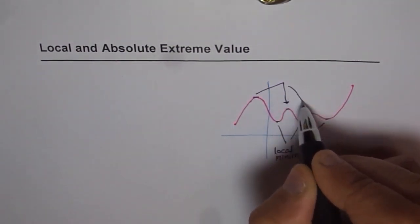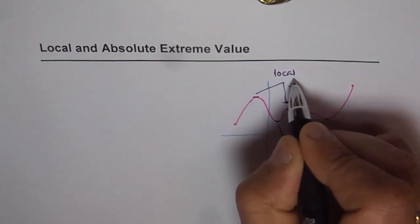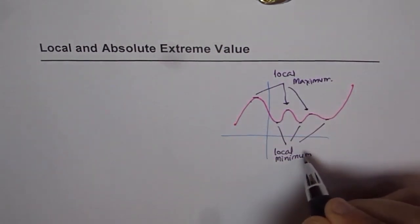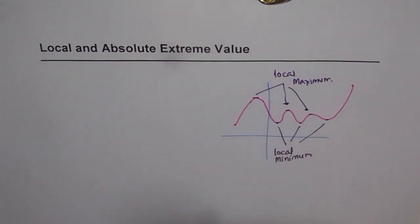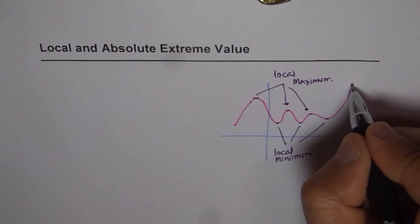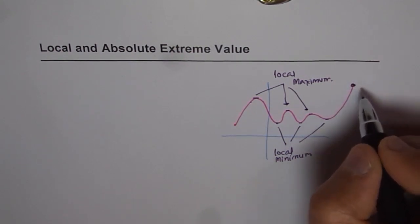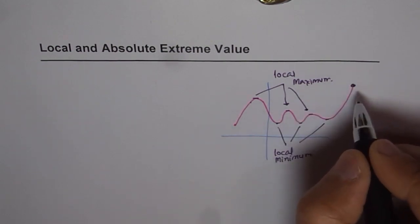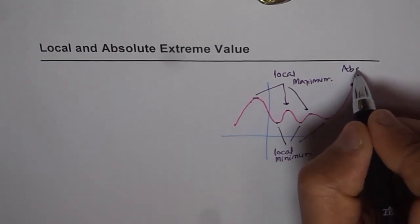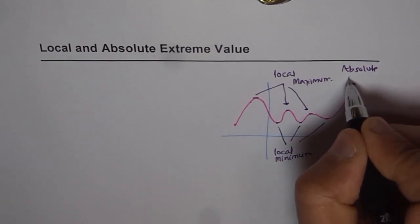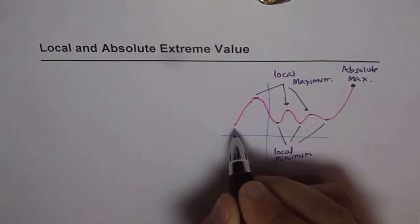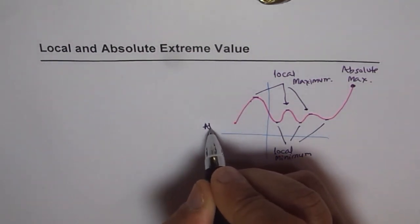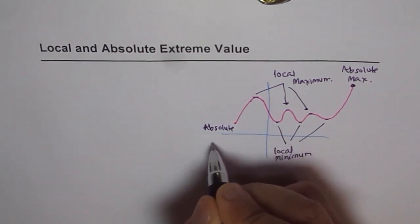For this function, those maximum and minimum values are local — only for a small, limited portion. The lower portions we call local minimum values, and the peaks are local maximum values. The function also has an overall maximum — nothing higher than that across the whole graph — so we call this the absolute maximum. Similarly, the lowest point is our absolute minimum.